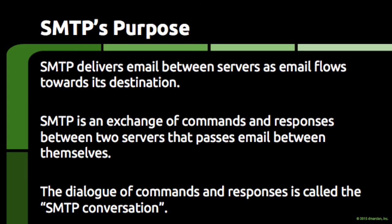SMTP is used to deliver email between servers when a piece of email needs to travel across the internet. The handoff of email between two different servers is what SMTP accomplishes, and SMTP does this using a very conversational set of commands. Servers talk to each other, exchange bits of information about themselves and about the email that will be handed over, and then the actual piece of email is communicated to the receiving server. This back and forth is referred to as the SMTP conversation.